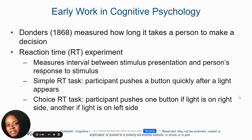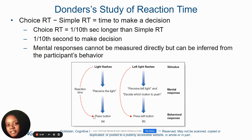Those of you who go to the ophthalmologist and have your eyes checked — they measure your reaction time; you press a button when you see a symbol so they know you can see properly. In Donders' work, he looked at simple tasks requiring a person to press a button quickly after a light appears, and also choice tasks, which required a person to push a button depending on whether the light was on the right or left side. The chart shows that it took one tenth of a second longer to complete the choice reaction time than the simple reaction time.